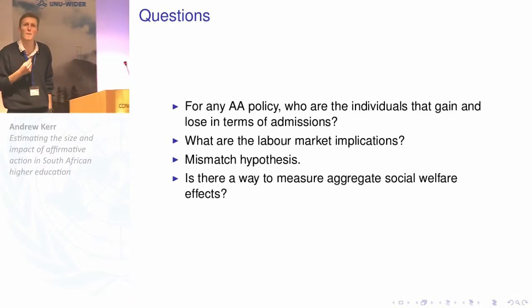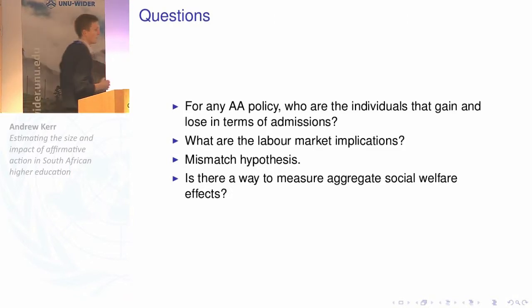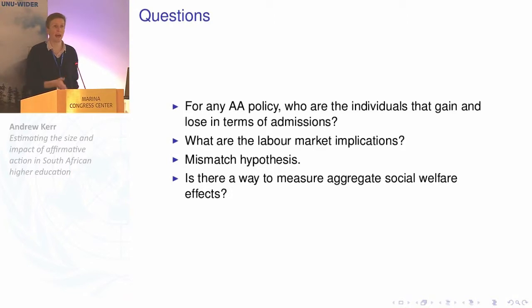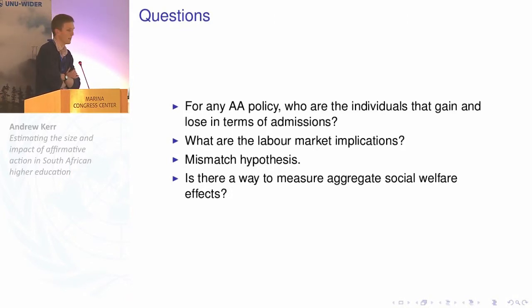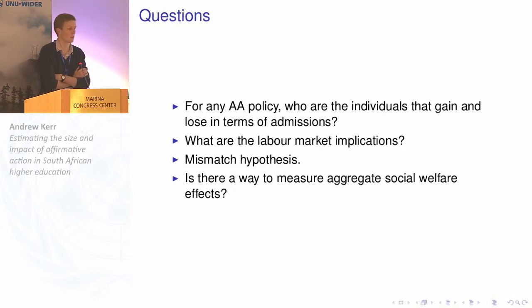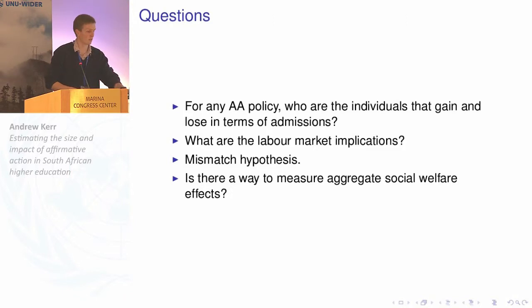There's a bunch of literature from the US looking at the impact of affirmative action — usually the bans that have been in place in a number of states fairly recently: Texas, California, Michigan — showing that if you outlaw the use of race in admissions, that can lead to quite dramatic decreases in minority enrollments and a reduction in applications from minority applicants, although there's some evidence that targeted recruitment programs can offset those effects.